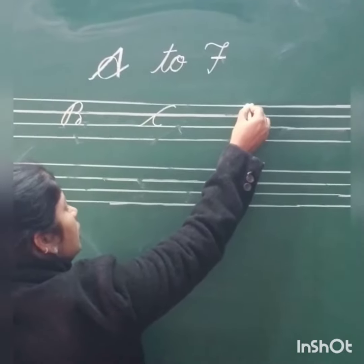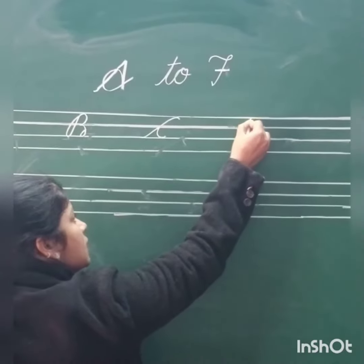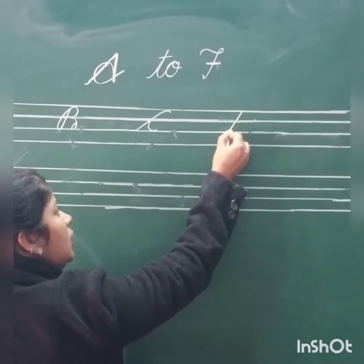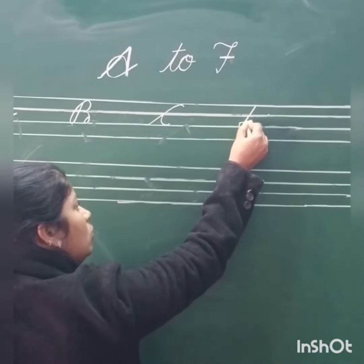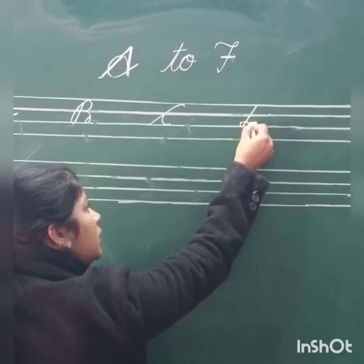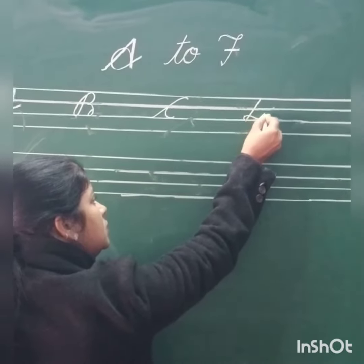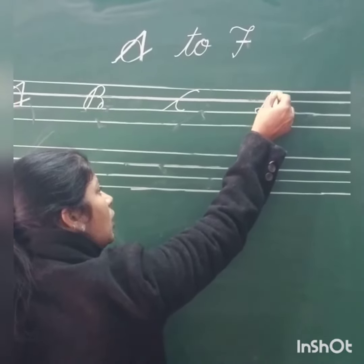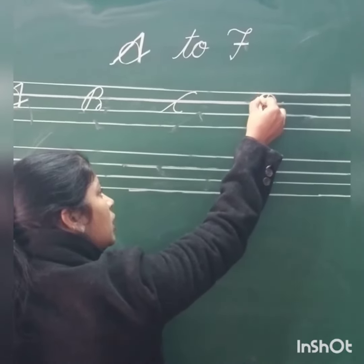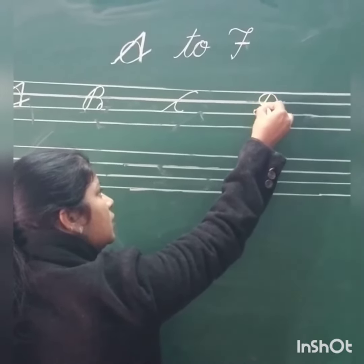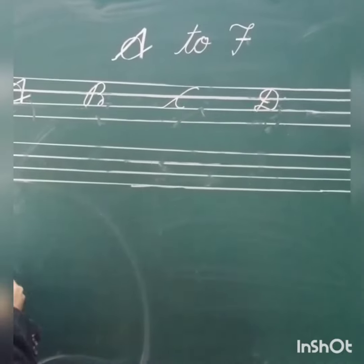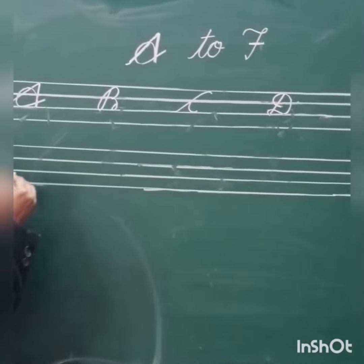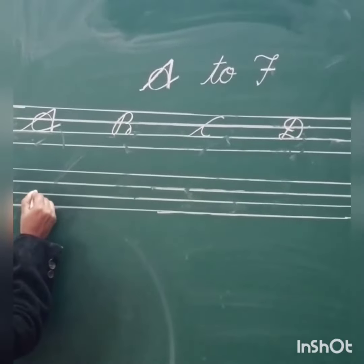Next, cursive D: sliding one, round, touch the blue line, round goes to blue line, cut curve — cursive D.